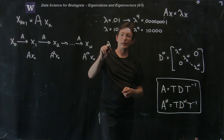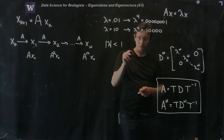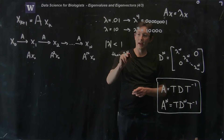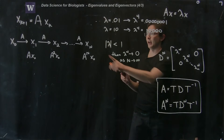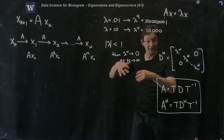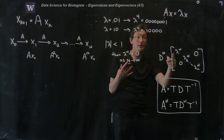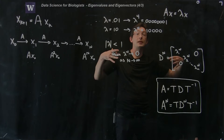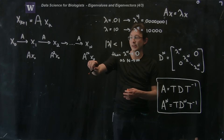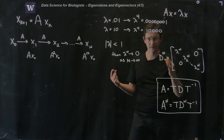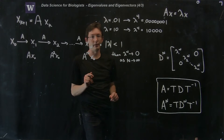The basic idea is: if the absolute value of lambda is less than 1, then lambda to the n goes to 0 as n goes to infinity. As I keep increasing n, lambda to the n gets smaller and smaller. So if all of my eigenvalues of A have absolute value less than 1, then D to the n gets smaller and smaller, A to the n gets smaller and smaller, and the vector x_n converges to 0.